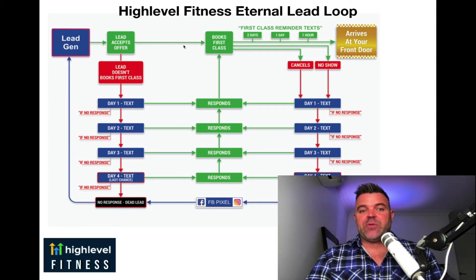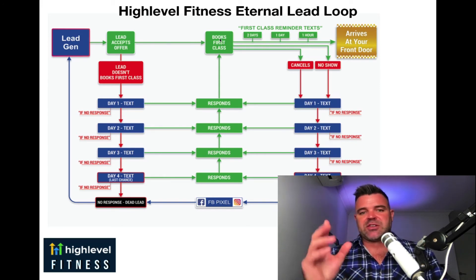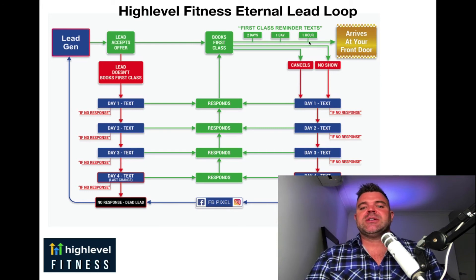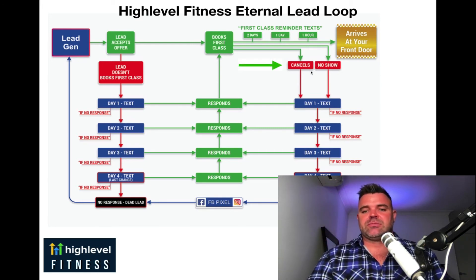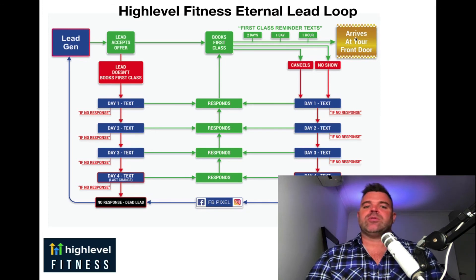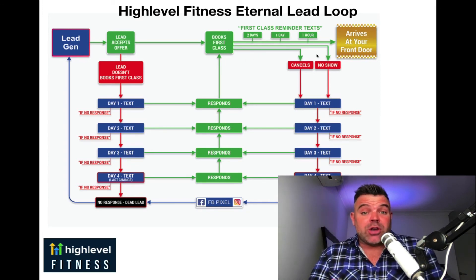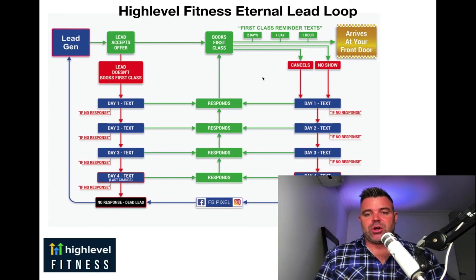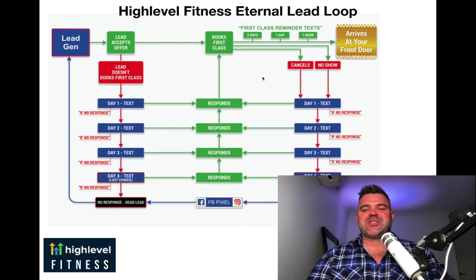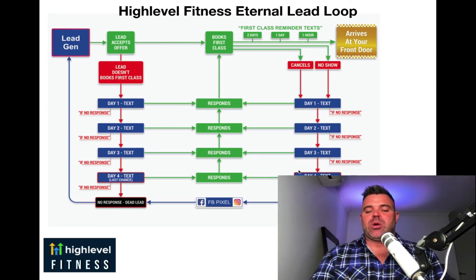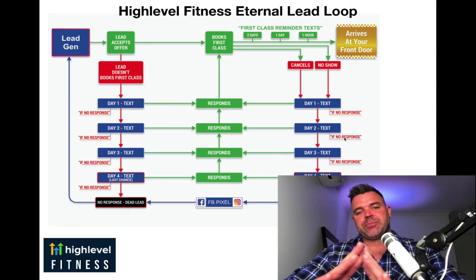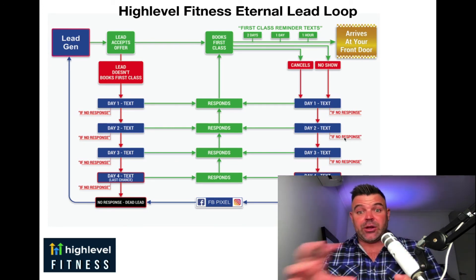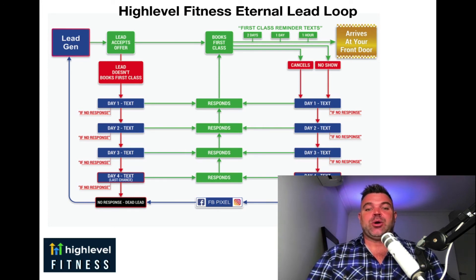Scenario number two: they take up the offer, respond to the text, book a class — say the 7 p.m. session — and then cancel. We put them back into the pipeline, move them to the next class, and the same reminder texts go out, and they show up for their first class. The third scenario is a no-show — they didn't let you know they weren't coming. We've got another pipeline, another series of automation texts following them up: day one, day two, day three, day four, day seven, day twelve — whatever the cadence. No matter where that person is in the pipeline or whatever scenario they present, everything is covered within this amazing automation and follow-up system.